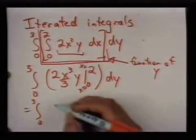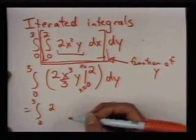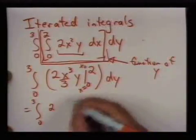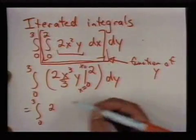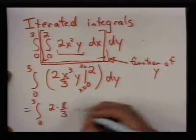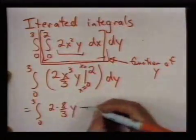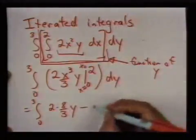So looking here, I'll have 2 times 2 to the third over 3, so 2 times 8 over 3 times y, minus what you get when you plug in 0, which is 0.